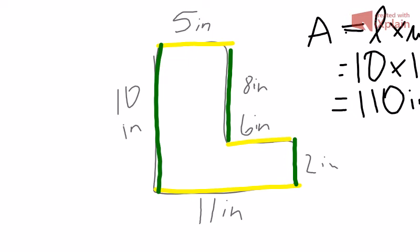Then I'm going to have to put in the missing part, so I'm going to use the 8 and the 6, because that's the missing area. 8 times 6 equals 48 inches squared.